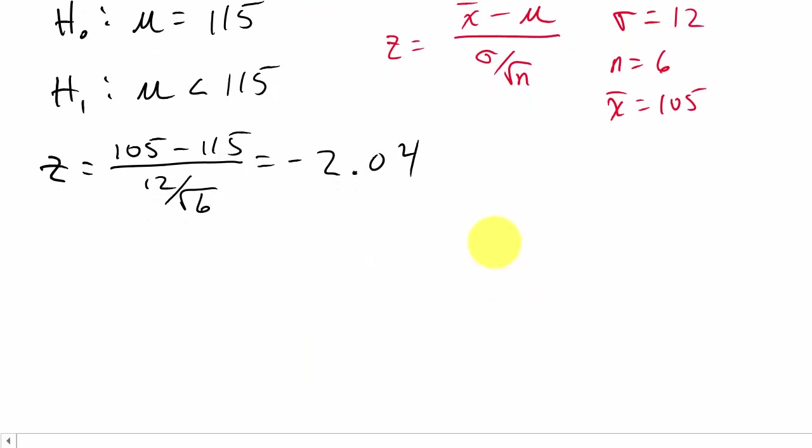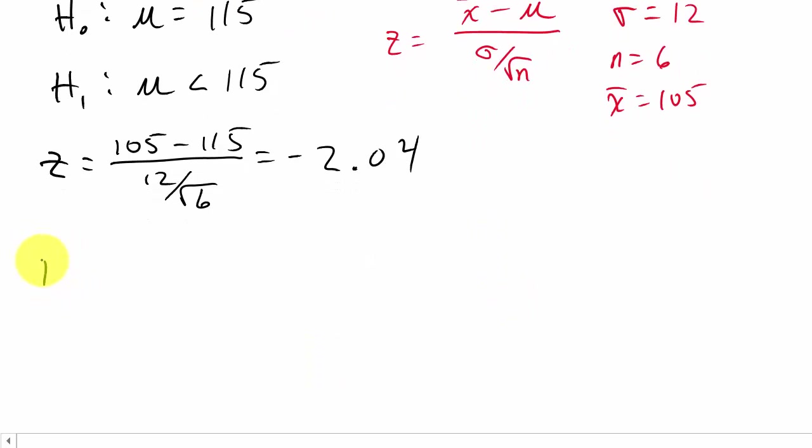Now we need to find our p-value. Our p-value is equal to the probability that x bar is less than 105, which is equal to the probability that z—because we converted it to a z value now—is less than negative 2.04.